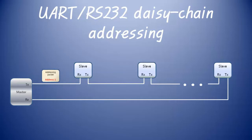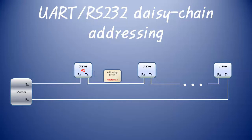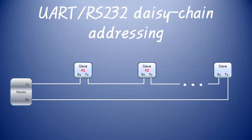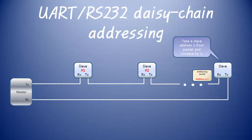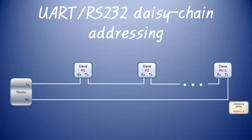If the address of the next incoming packet matches its own address, the slave should respond according to the command. Slave device number one receives the packet 1 + COMMAND_ADDRESSING + dummy, and stores 1 as its own address. It then increments the address by one to send 2 + COMMAND_ADDRESSING + dummy to the next slave device. Slave device number two receives that packet and stores address 2 as its own address.